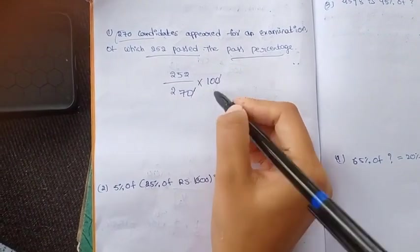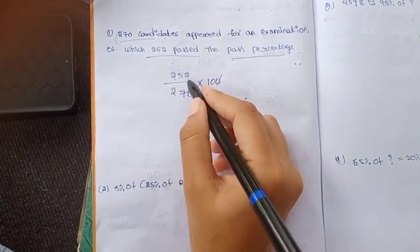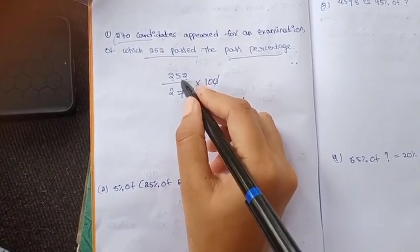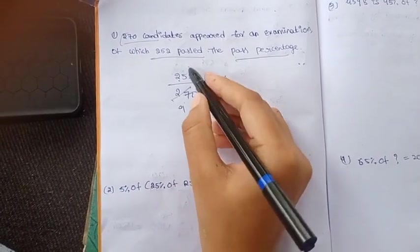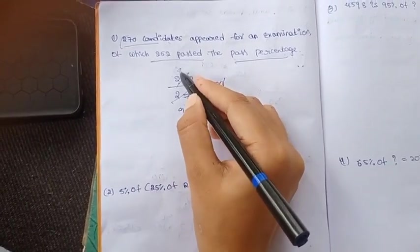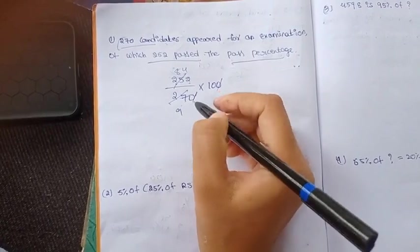The pass percentage is 252 divided by 270 multiplied by 100. So 252 divided by 270 - we can cancel, 27 goes into 252 nine times. The three table cancels out in the nine, three table cancels out in the eight times, so 24.